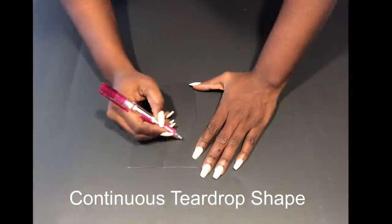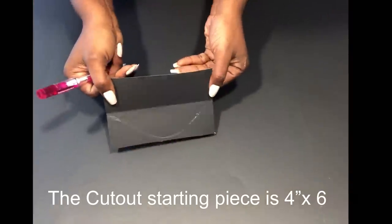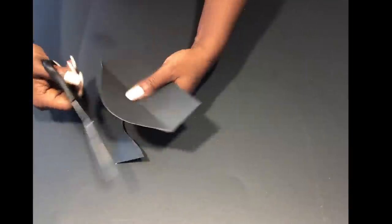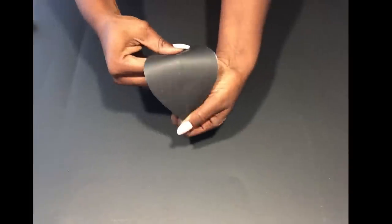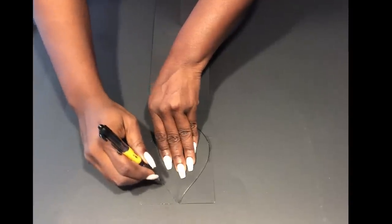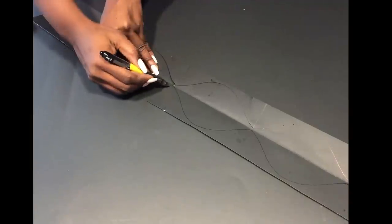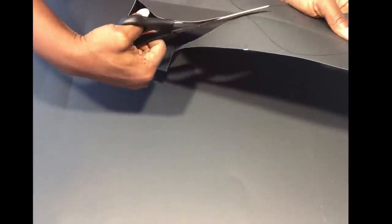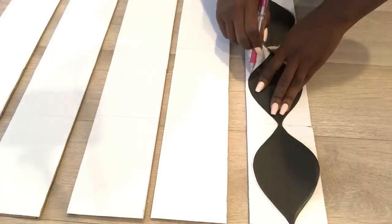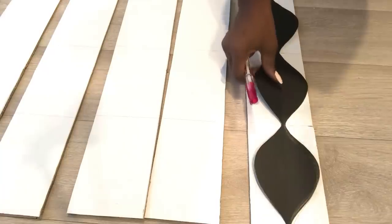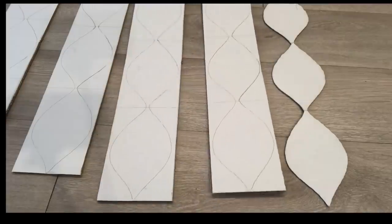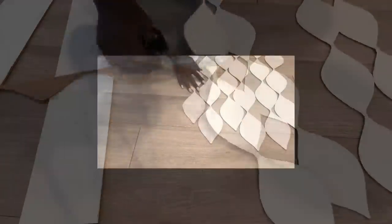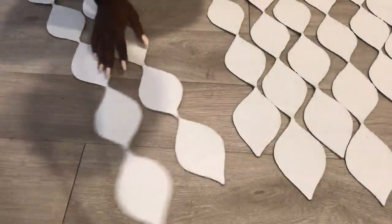Then I drew a shape of a teardrop but just half of it, cut it out and then I folded it just to make sure that I get the exact same shape on the other side. I will continue tracing out the patterns on the remaining strips.